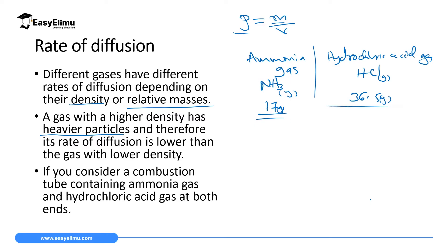As you can see, HCl gas is heavier and has a larger mass than ammonia. So we expect ammonia, which has less mass and is lighter, to move fast. Hydrochloric acid gas, which has a large mass and high density, will move very slowly.